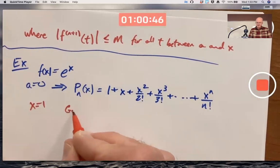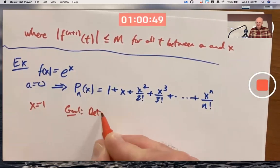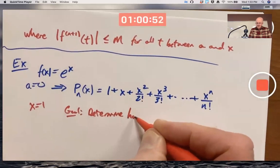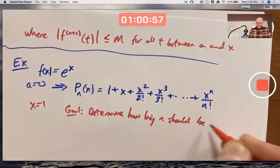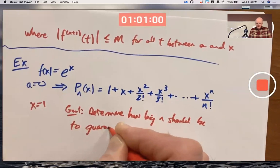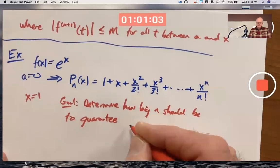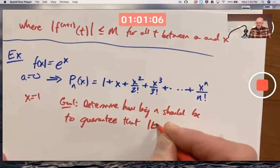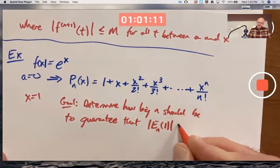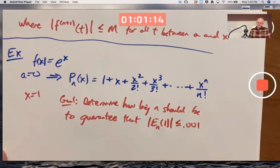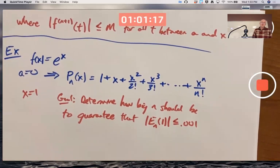My goal is determine how big n should be to guarantee that the absolute value of the error when I plug in x equals 1 is less than or equal to 0.001. How big should n be?